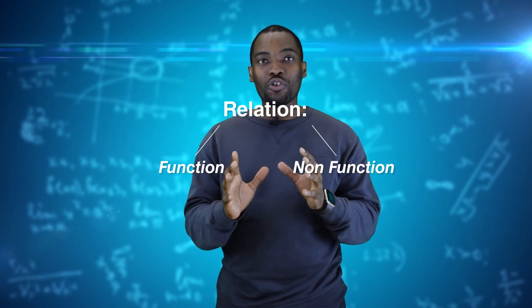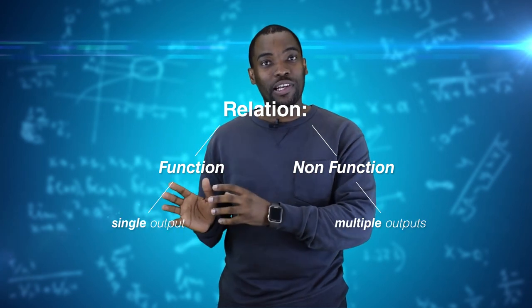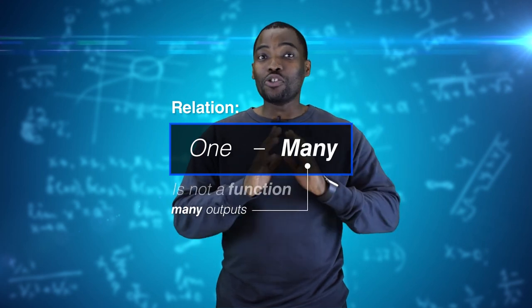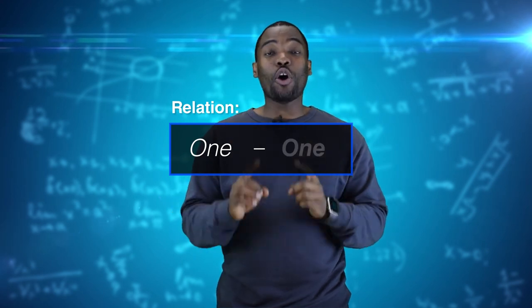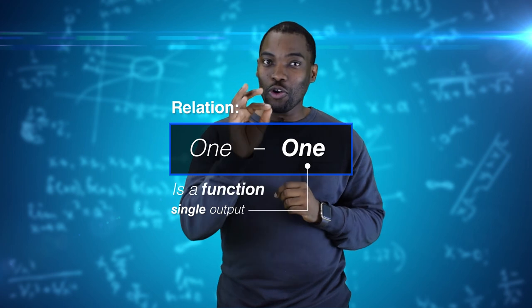So, in summary, whenever you try and determine whether a relation is a function or not, all you have to do is look at the outputs of that relation. If the relation has many outputs, then it is not a function. But, if it only has one output, then you know you've got a function. So, this information should help you build a more solid foundation in the functions section. Go ahead, try a couple of questions and I'll see you in the next video.